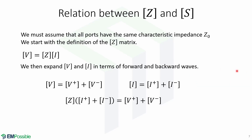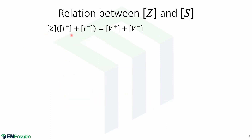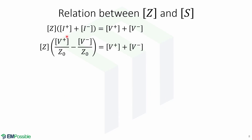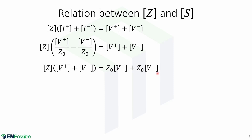Now we will derive the relationship between the impedance matrix Z and the scattering matrix S. First, we must assume that all ports have the same characteristic impedance Z0. We start with the definition of the Z matrix, in which voltage equals impedance times the current. We can now expand the voltage and impedance matrices in terms of forward and backward waves, leading to this expression. Now, substituting this into this expression gives us this. Starting from this expression, we write the current in terms of voltages. Remember that we assume that the impedance was Z0. Now, we can move this Z0 to the other side and distribute.